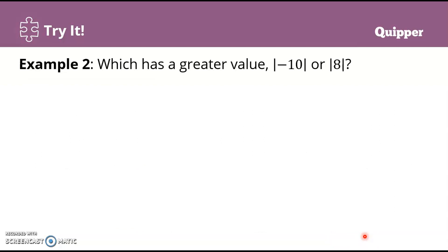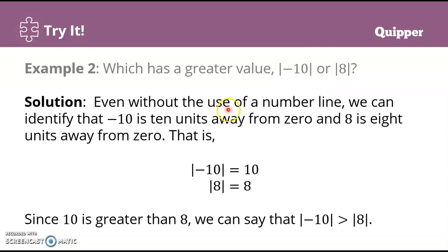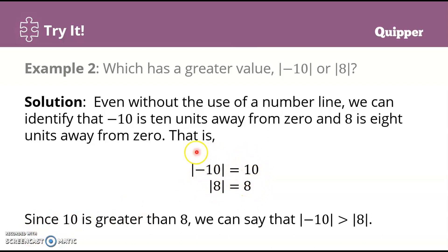So which has a greater value: the absolute value of negative 10, or the absolute value of 8? Even without a number line, we know that negative 10 is 10 units away from 0, so the absolute value of negative 10 equals 10. And 8 is 8 units away from 0, so the absolute value of 8 is 8. Since 10 is greater than 8, the absolute value of negative 10 is greater than the absolute value of 8.